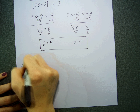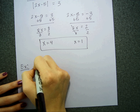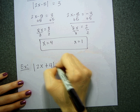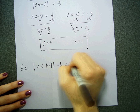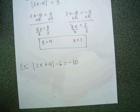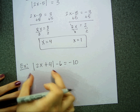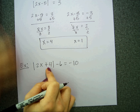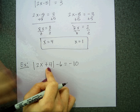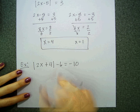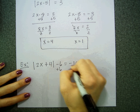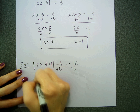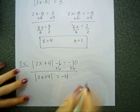One final example. Let's say I have the absolute value of 2x plus four minus six is equal to negative ten. Before I can do anything, I want to make sure the absolute value is by itself. I have stuff on the inside, which is fine, but I have this negative six on the outside. So I add six to both sides, and I get the absolute value of 2x plus four is equal to negative four.